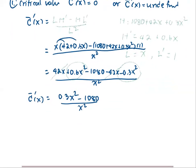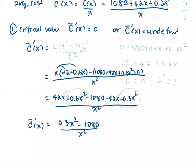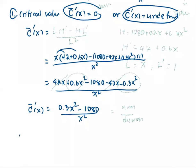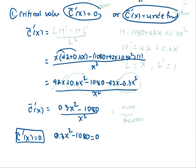Now we have the derivative of the average cost function as a fraction. To determine the critical values, the first case is where the derivative equals 0, which comes from the numerator equaling 0. So we consider 0.3X² − 10,080 = 0 and solve for X.